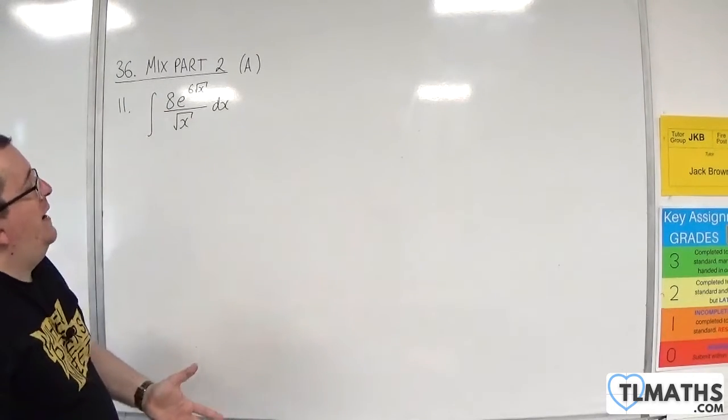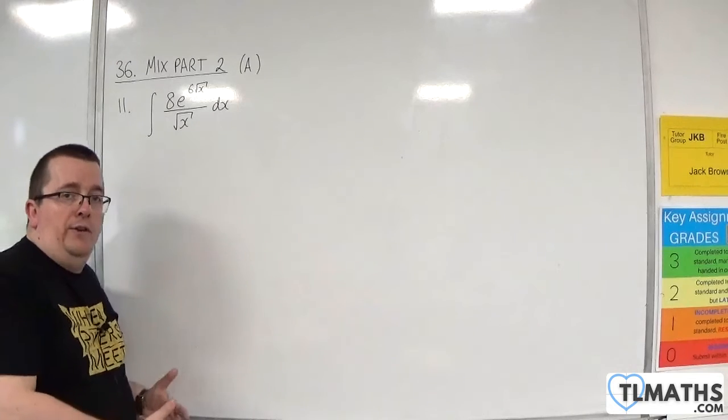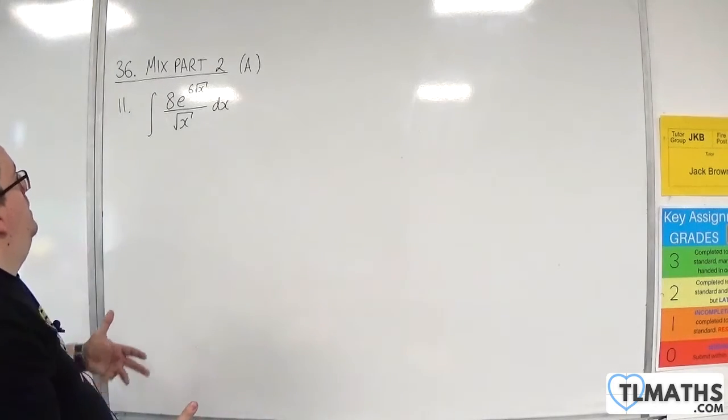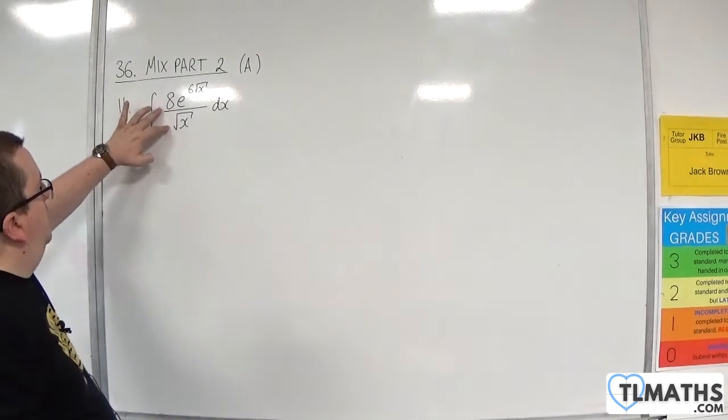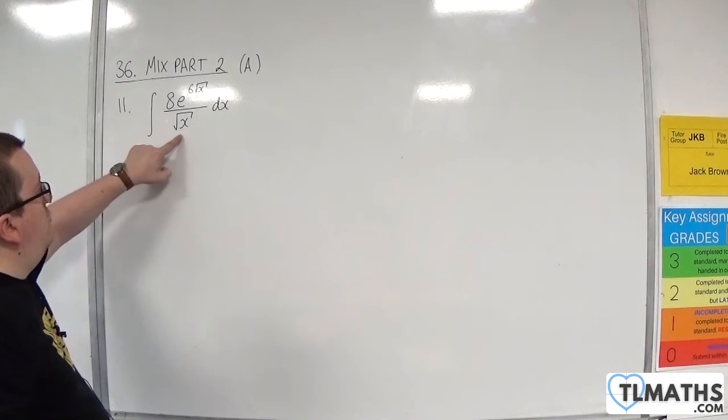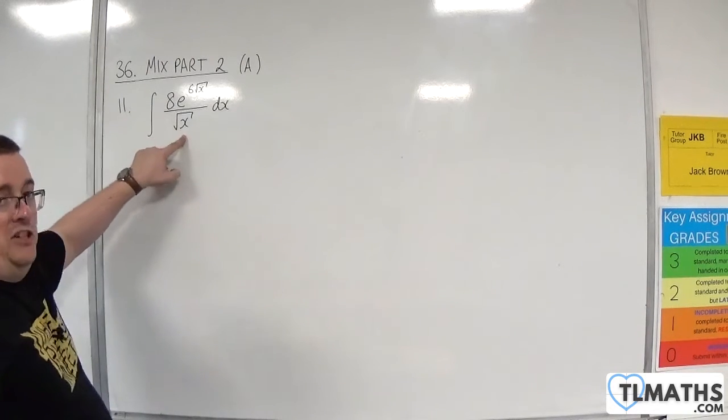When you differentiate that, you get 3x to the minus a half. Out the front, we've got this 8 over root x, which is 8x to the minus a half.